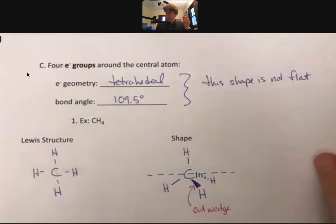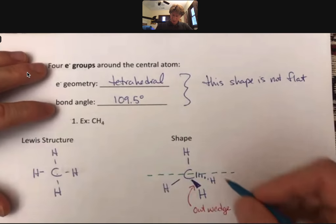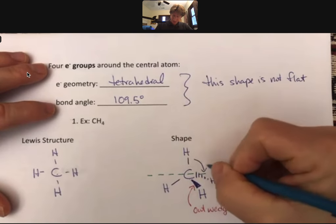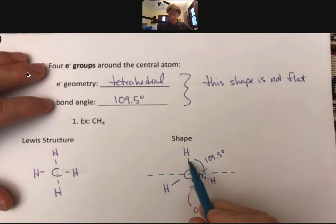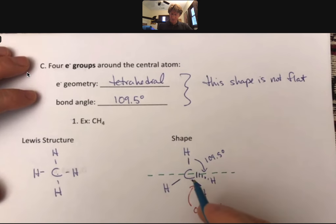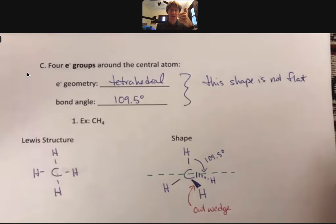And bond angles. So each of these bond angles is 109.5 degrees. Same thing here as we talked about before. All of these are atoms, so it's a perfect 109.5. We are about to see some differences.